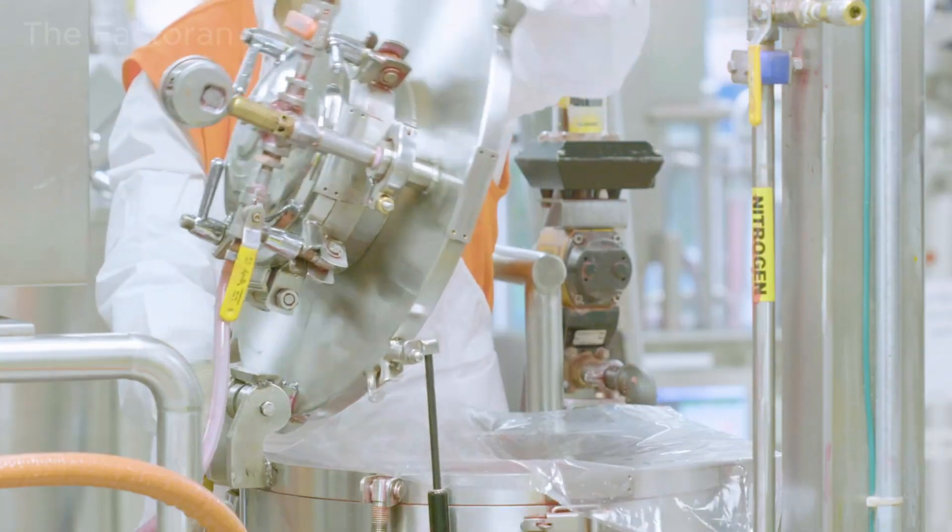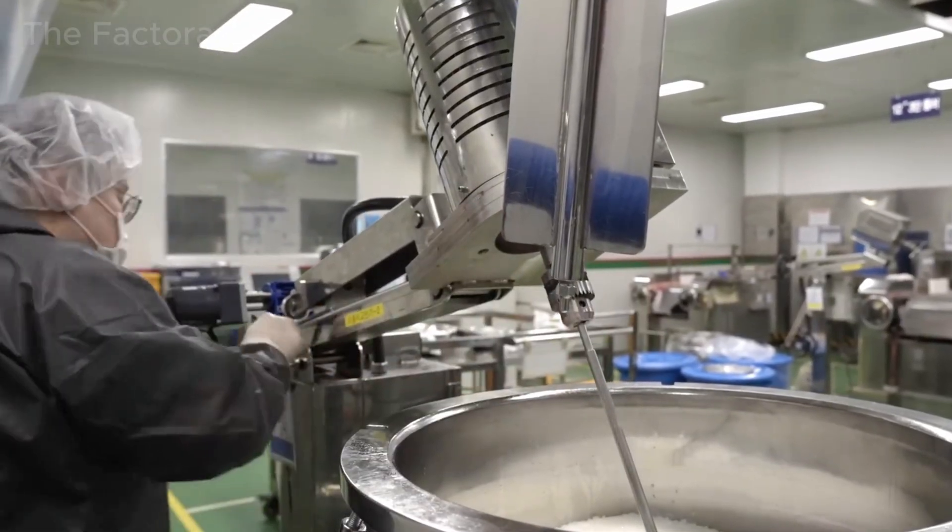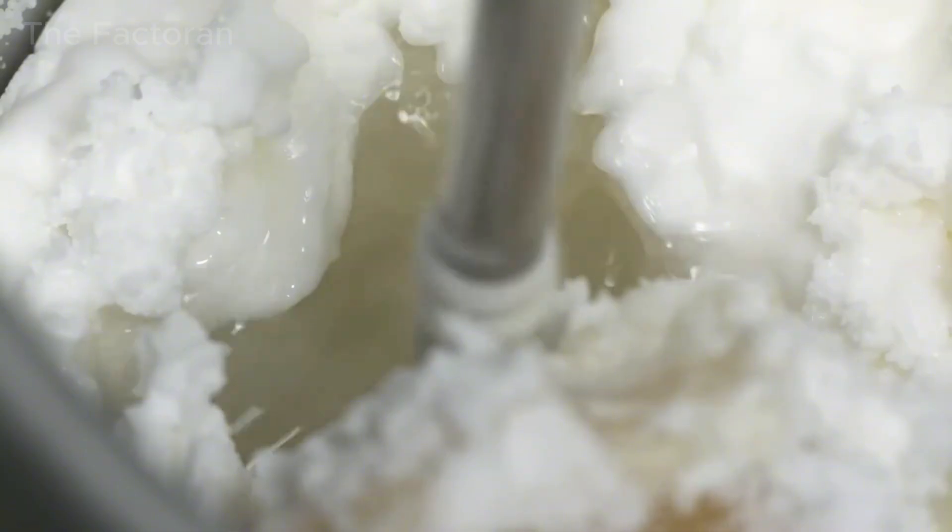The blending process at this stage typically lasts from 30 to 60 minutes, until the wax has fully melted and the mixture reaches a uniform, smooth and stable liquid state.